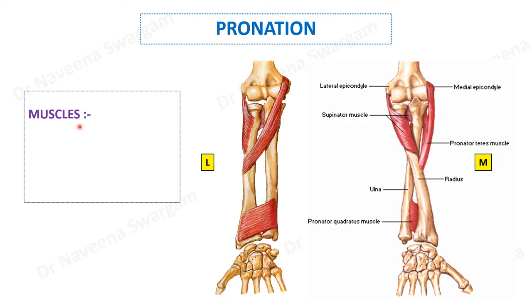The muscles producing the pronation movement are pronator quadratus and pronator teres. Both belong to the flexor compartment of the forearm. Pronator quadratus is the prime mover.